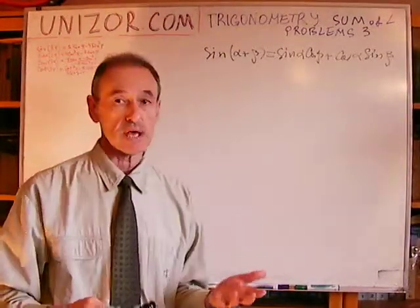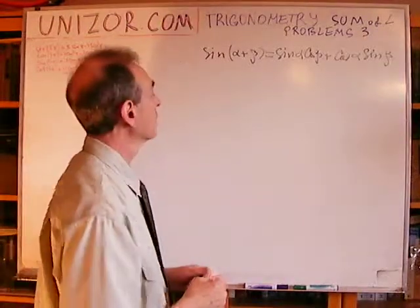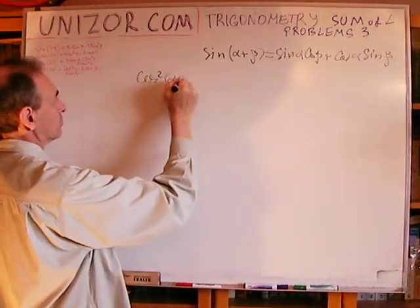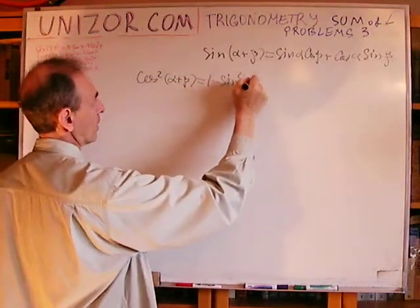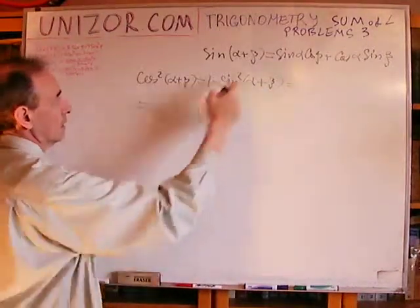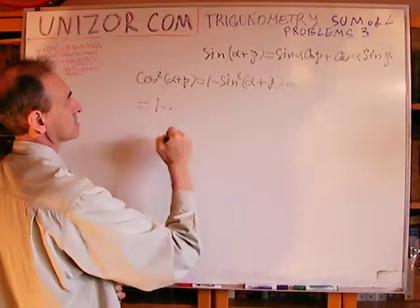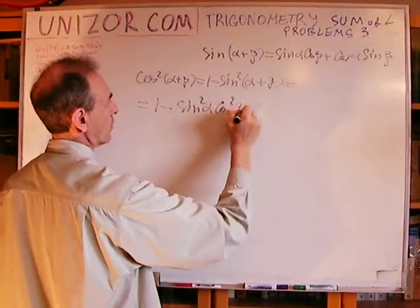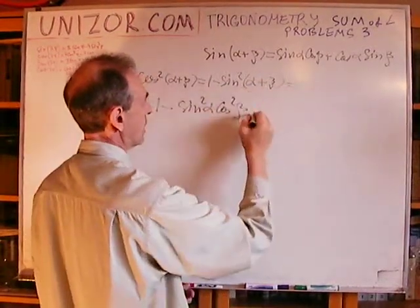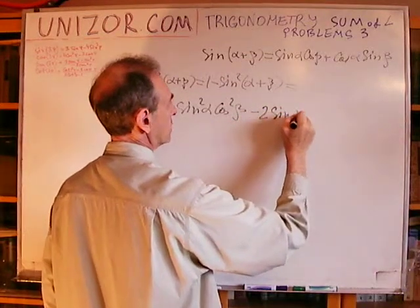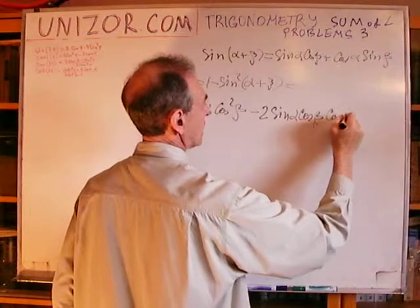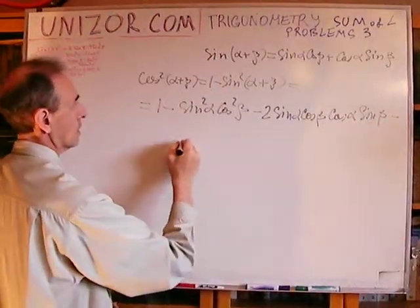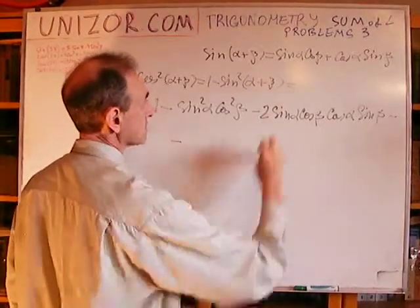The method I suggest is the following. We know that sine squared plus cosine squared equals one. So cosine squared of (alpha + beta) equals one minus sine squared of (alpha + beta). Let's square the sine formula: one minus [sine alpha cosine beta plus cosine alpha sine beta] squared, which gives sine squared alpha cosine squared beta plus two sine alpha cosine beta cosine alpha sine beta, and minus the square of the last term.